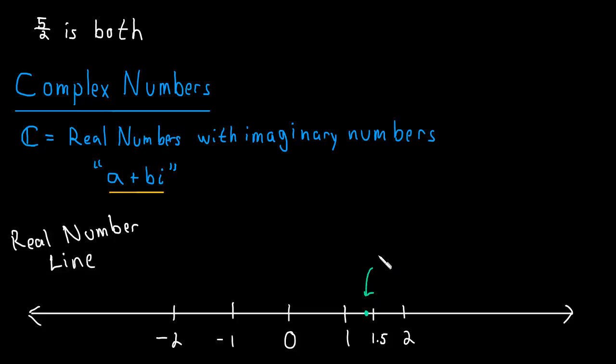So for example, right where that green dot is, that's perhaps the square root of 2. Because the square root of 2 is approximately 1.414 and it keeps going on forever. So it's just a little less than 1.5.